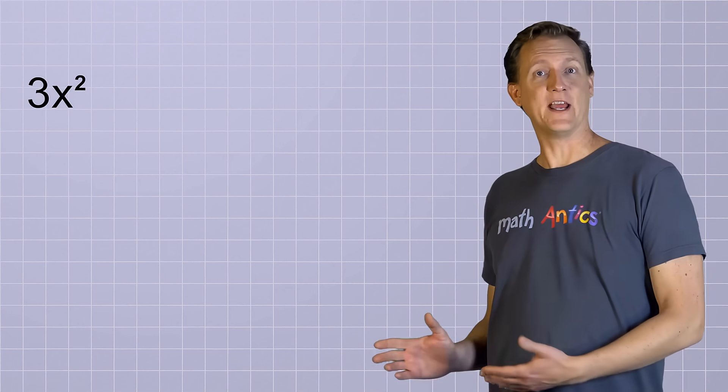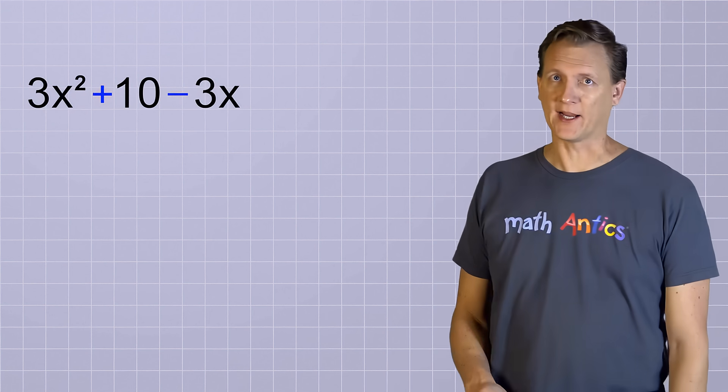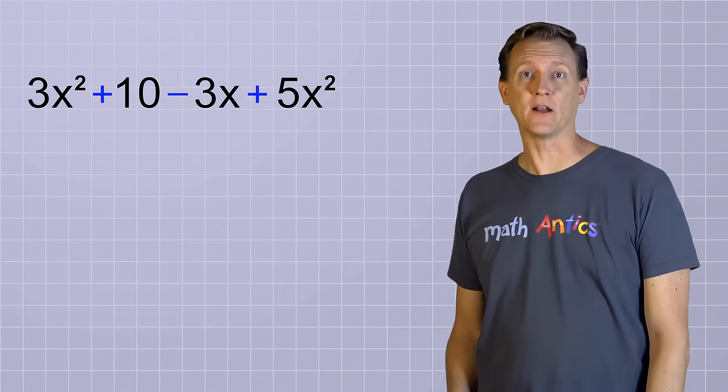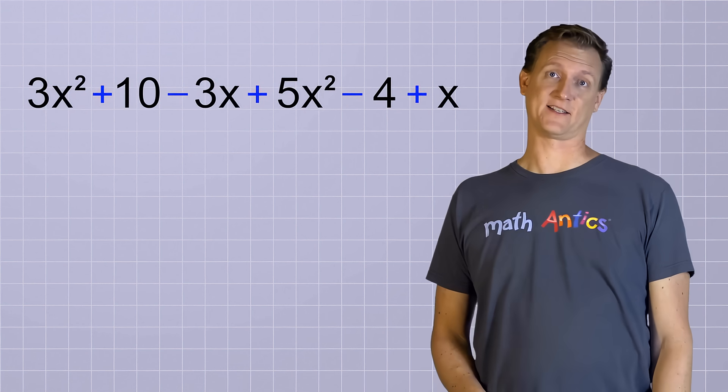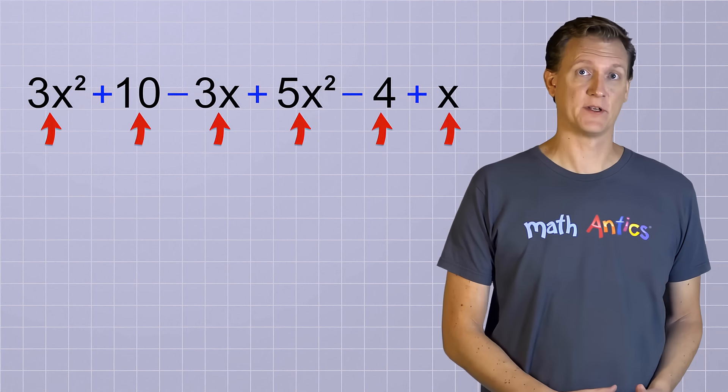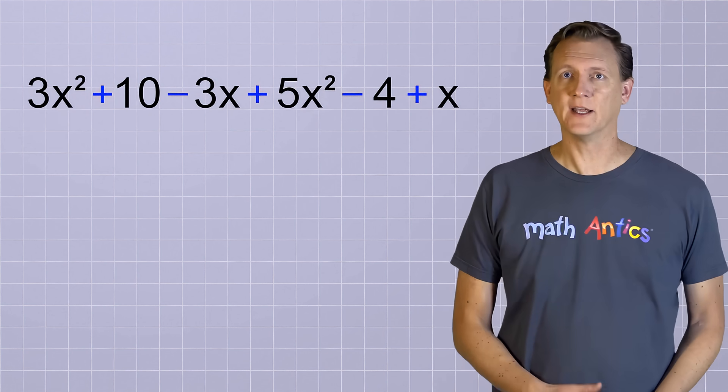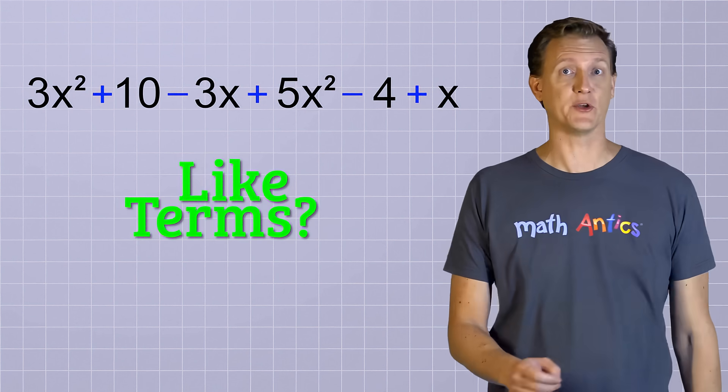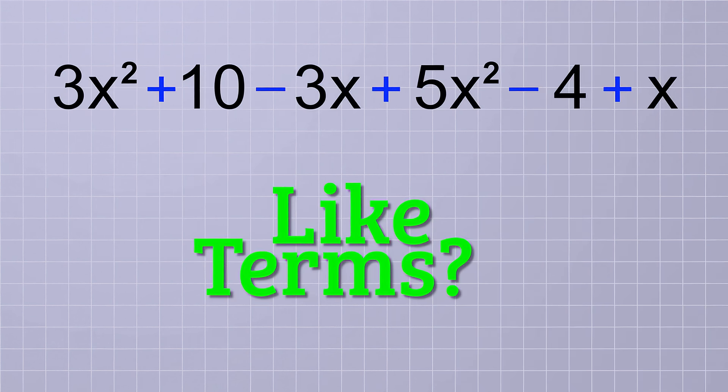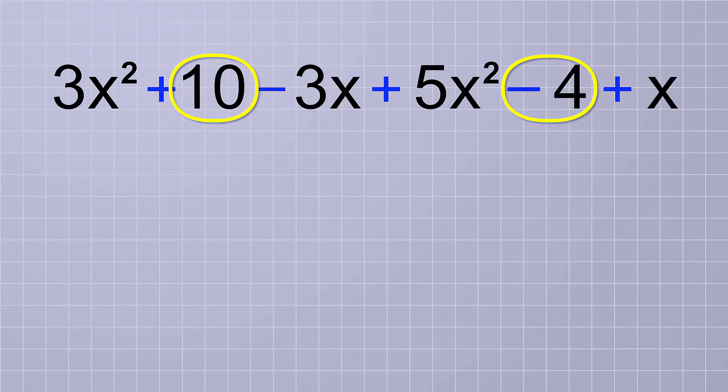Ready for an even more complicated polynomial? 3x squared plus 10 minus 3x plus 5x squared minus 4 plus x. This polynomial has 6 terms, and when you get a long polynomial like this, the first thing to do is look to see if any of the terms are like terms so you can combine them. Well, right away you may notice that there's two constant terms in this polynomial, positive 10 and negative 4. So let's start by combining them into a single constant term, positive 6 since 10 minus 4 equals 6.